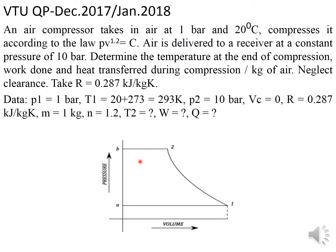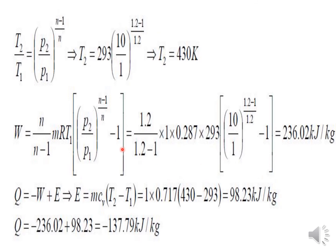On the PV diagram, compression goes from 1 bar to 10 bar. To find T2, we use the polytropic temperature-pressure relation: T2/T1 = (p2/p1)^((n−1)/n). With T1 = 293 K, p2/p1 = 10, and n = 1.2, substituting gives the answer for T2.